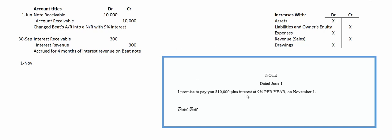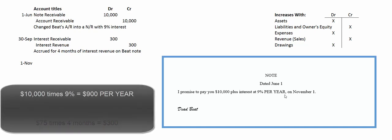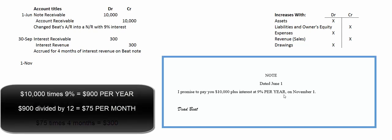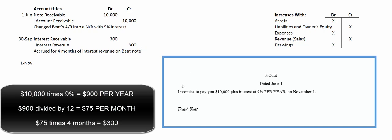The answer is $300. 9% of $10,000 is $900 per year, but we've only earned four months worth of interest revenue at this point. Take that year's worth of interest — $900 — divided by 12, and that gives one month's worth of interest as the starting point: $75 per month. Four months have gone by, so four times $75 is $300 worth of interest revenue.